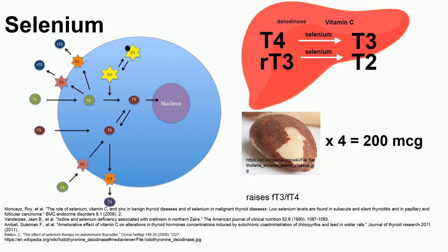A lot of the deiodinase enzymes are found in the liver, and also some in the kidney, but they are throughout the entire body. Selenium helps you utilize thyroid hormones by activating deiodinase. In order to get 200 micrograms of selenium, you can eat four Brazil nuts per day. You can also eat a couple servings of tuna, but Brazil nuts are the highest source of selenium in the diet.